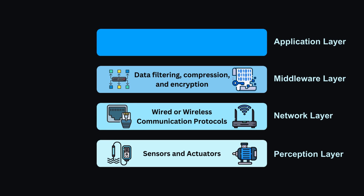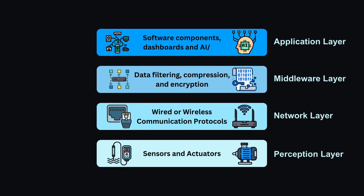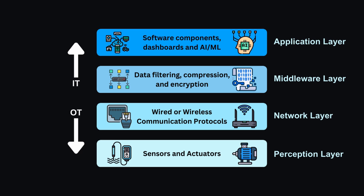Application layer: this is the topmost layer of the IoT architecture, where data from different IoT devices is processed and utilized to provide value-added services. Applications in this layer can range from simple data visualization and monitoring dashboards to complex analytics and control systems. IoT applications may include functionalities like real-time monitoring and predictive maintenance.